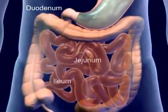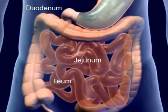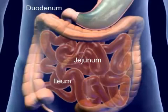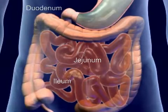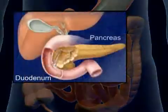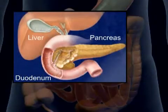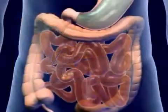The major portion of absorption and digestion occurs in the small intestine. The mucosa secrete enzymes that supplement the digestive enzymes of the pancreas and liver. This completes the chemical process of digestion.